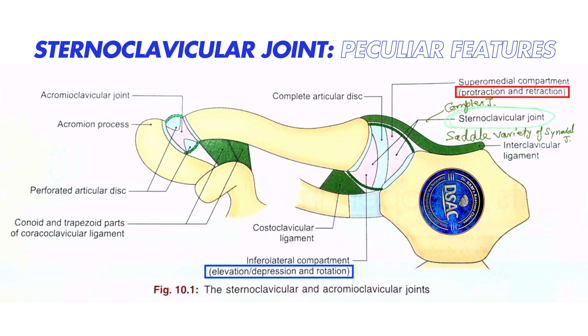So remember: supramedial compartment — protraction and retraction; infralateral compartment — elevation, depression, and rotation.